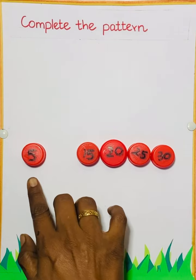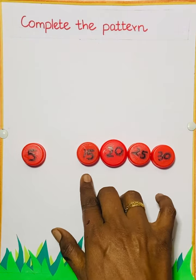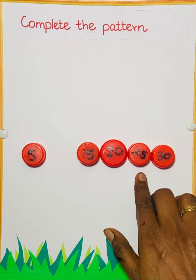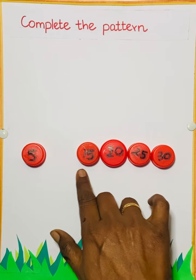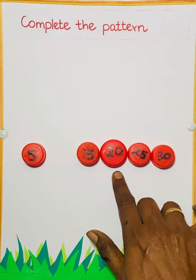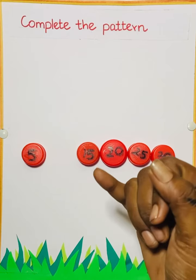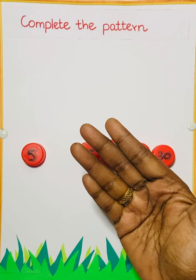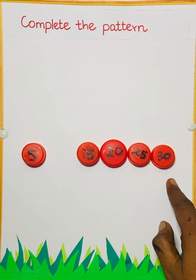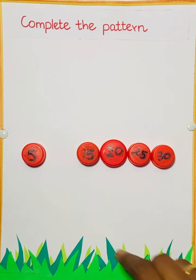Next one. 5, dash, 15, 20, 25, 30. So after 5, what number will come? See the numbers. 15, 20. So after 15, 16, 17, 18, 19, 20. So this is skip counting of 5. So after 5, what number will come?